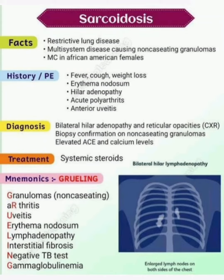Assalamu alaikum dear doctors. In this video I am discussing about sarcoidosis. The main facts or pathophysiology of sarcoidosis is that there is a restrictive lung disease, multi-system disease causing non-caseating granulomas, most common in African American females.